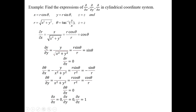∂r/∂x = x / √(x² + y²). Converting to cylindrical polar coordinates: x = r cos θ and √(x² + y²) = r, so ∂r/∂x = cos θ.